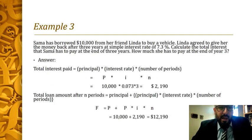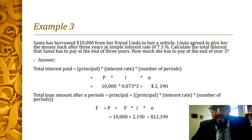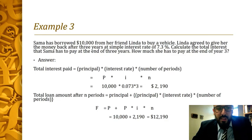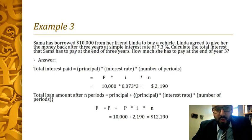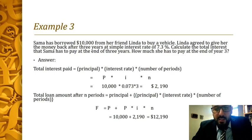Moving on to example three, which is about the simple interest rate: Sama has borrowed ten thousand dollars from her friend Linda to buy a vehicle. Linda agreed to be paid back after three years at a simple interest rate of 7.3%. We need to calculate the total interest Sama has to pay at the end of three years. Using the equation, total interest paid is P times i times n: ten thousand times 7.3% times three.